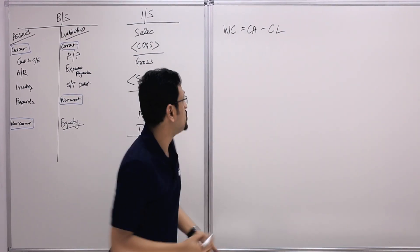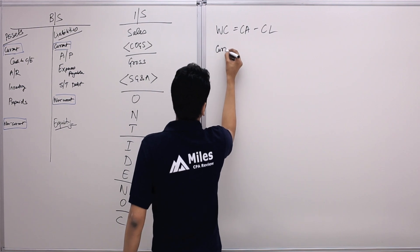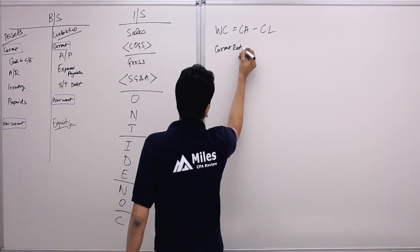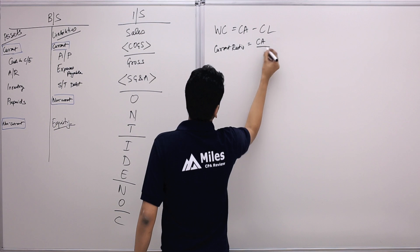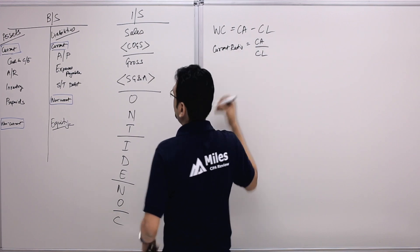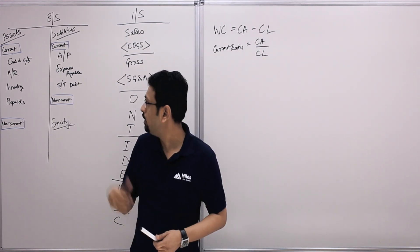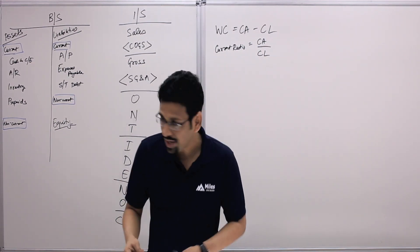Then you have something we call the current ratio. The current ratio is current assets divided by current liabilities. Let me put a few numbers on the balance sheet so you can actually understand these ratios.